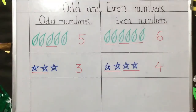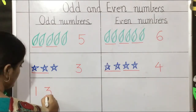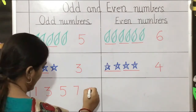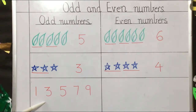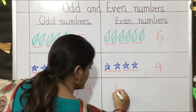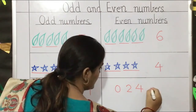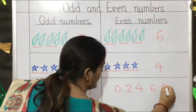So children, the numbers that end with one, three, five, seven, and nine are odd numbers. Also, these five numbers are the first five odd numbers. Now the numbers that end with zero, two, four, six, and eight are even numbers.